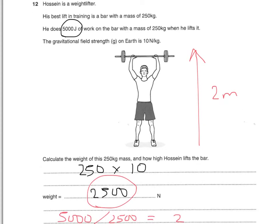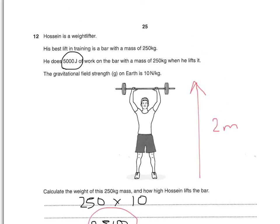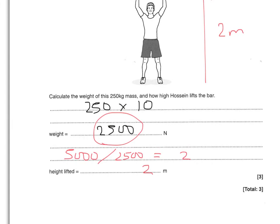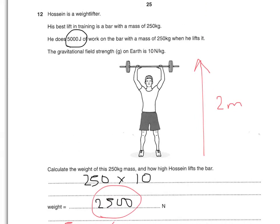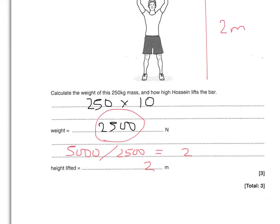Always check whether your answer makes sense. If you divided the other way — 2,500 ÷ 5,000 — you'd get 0.5 metres, which isn't a realistic lift height. If you multiply them together you'd get a huge number, far taller than a person. Always think about whether your answer is going to make sense.